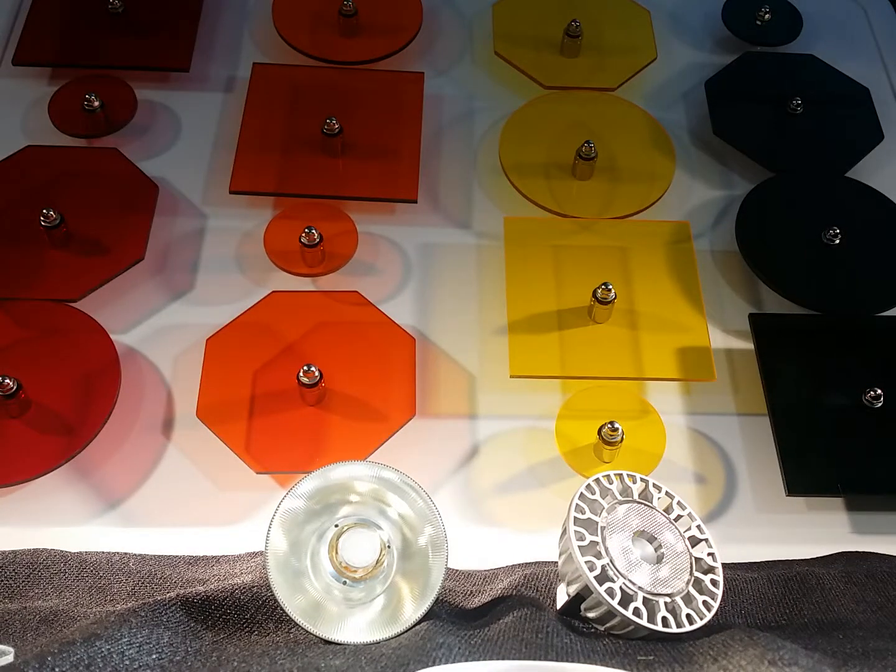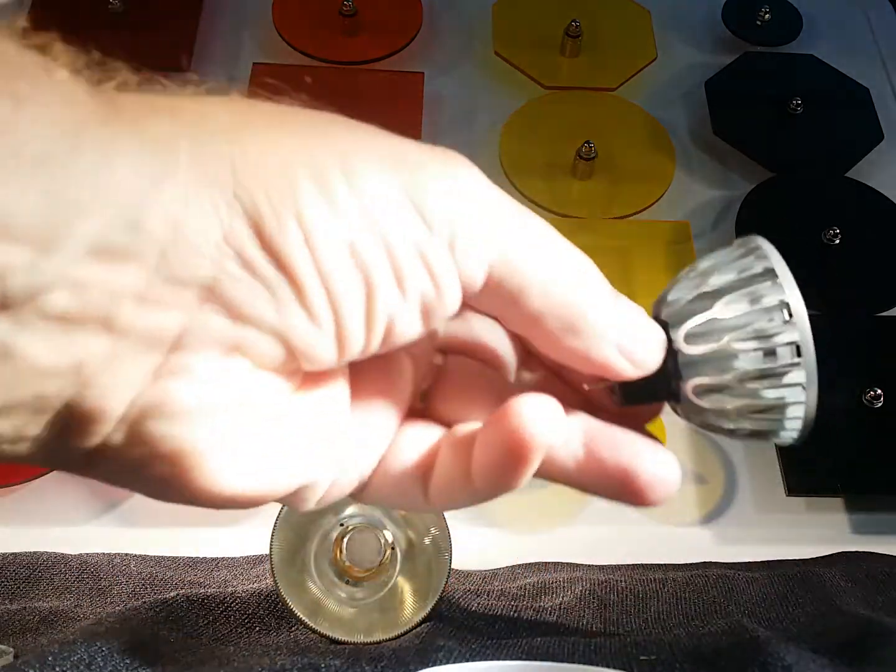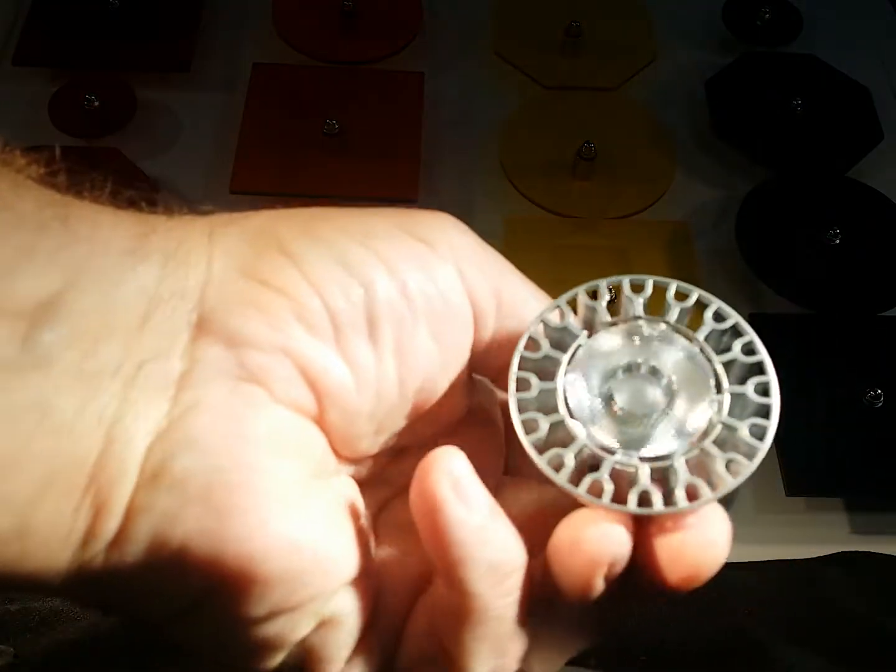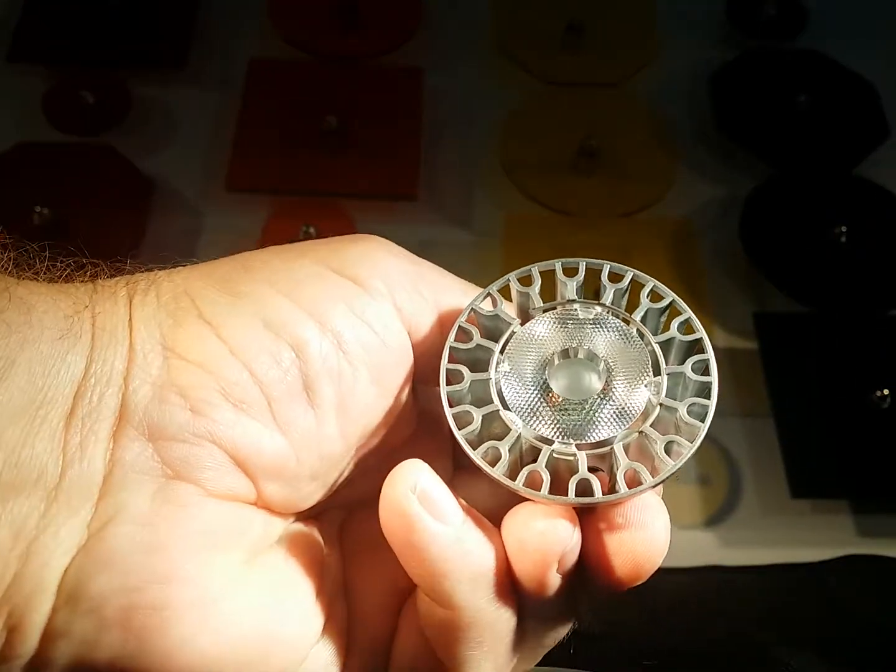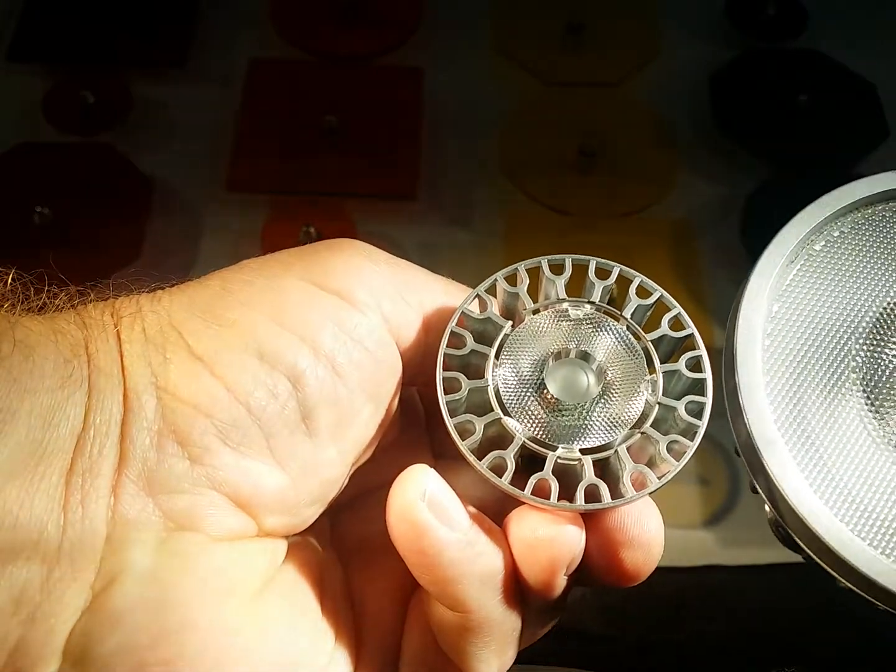Sora LED lamps come in two styles. This style, the face has this appearance. That's a two-inch wide bulb. Here's a four-inch wide bulb.